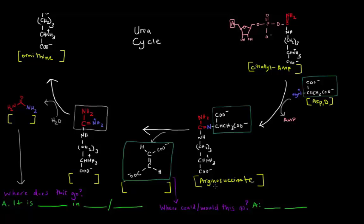Why is it called arginosuccinate? "Argino" comes from arginine, an amino acid we've learned before. "Succinate" is an intermediate we've seen in the TCA cycle. This portion here looks a lot like succinate — all it needs is for this to be a CH2 group so it can hop off as succinate. And this portion here looks a lot like arginine, so it's just arginine with a succinate attached to it.